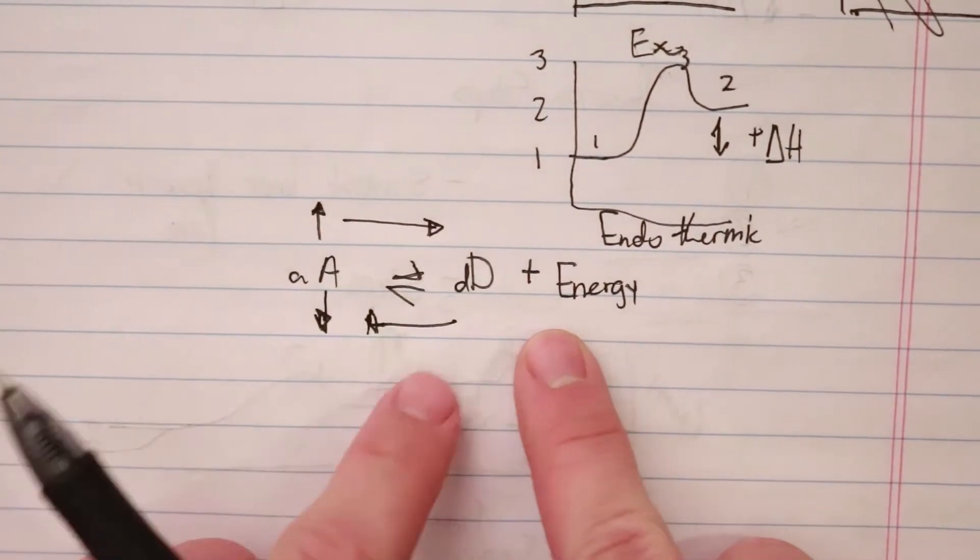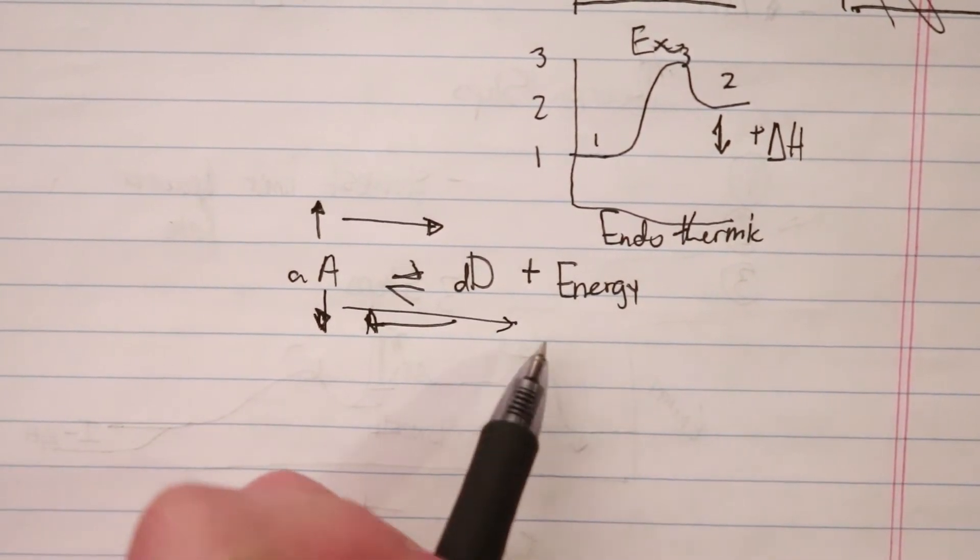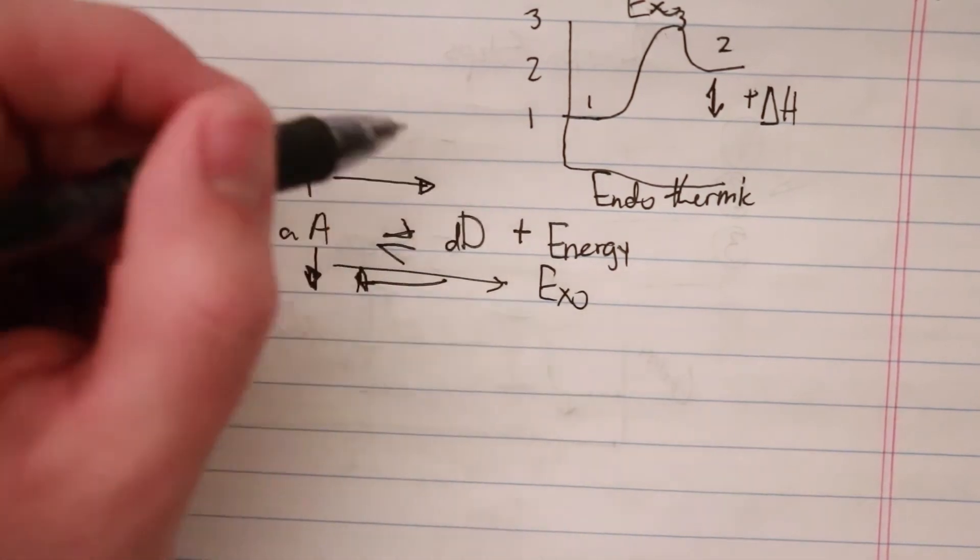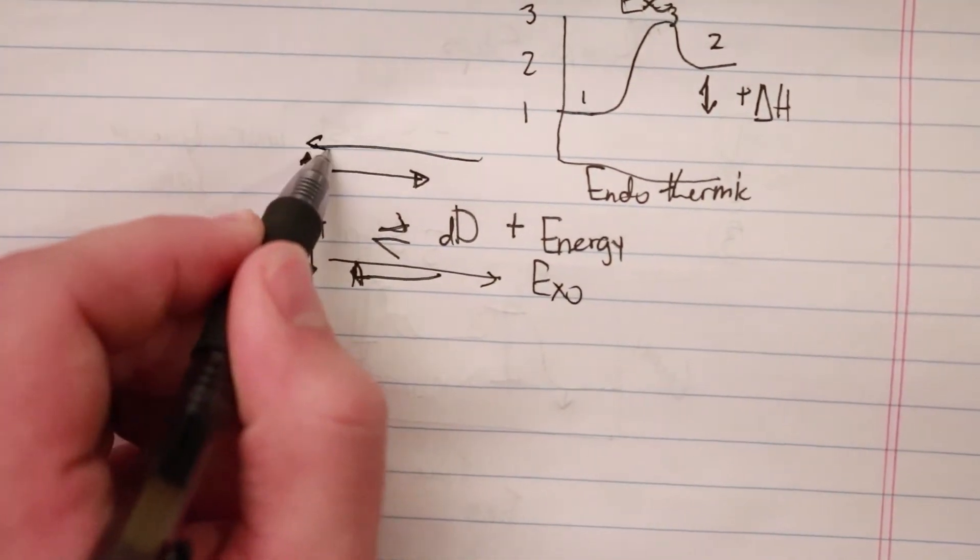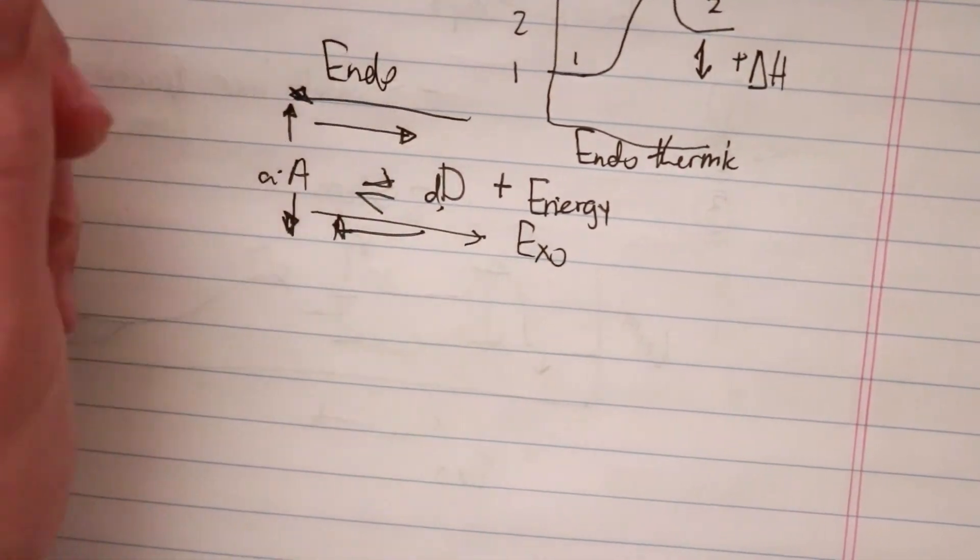And then energy—because there's energy produced, the forward reaction would be exothermic. But if we go the reverse reaction way, it takes energy plus D to make A, so this would be endothermic.